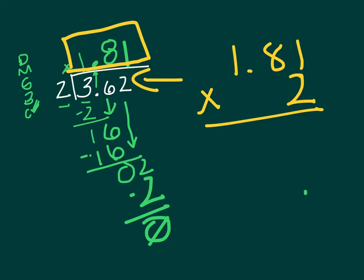Okay, this is a terrible 2. 2 times 1 is 2, 2 times 8 is 16. 2 times 1 is 2 plus 1 is 3. Wow, that was fairly easy.